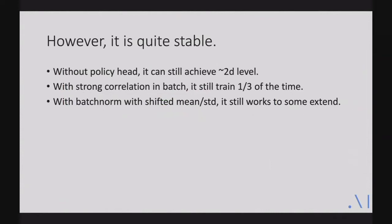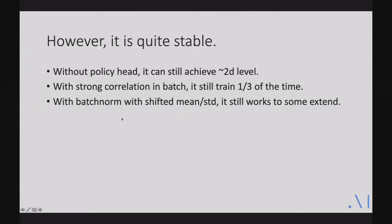Despite these issues, the algorithm is quite stable. We also did involuntary ablation studies — basically bugs. One bug was in PyTorch's KL divergence backpropagation, where the gradient was 300 times lower than expected, preventing the policy head from training. Yet the system still achieved strong performance, and after fixing it, performance improved and went up quickly within a day. This shows the algorithm itself is robust.